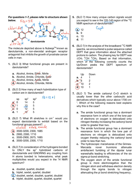Question 7 asks why the amide carbonyl stretch is lower than 1700. The correct answer is B. The amide functional group has a resonance form in which the lone pair on nitrogen is delocalized up onto the oxygen. This makes the carbonyl stretch less of a double bond character and more of a single bond character, hence the reason why it occurs below 1700.